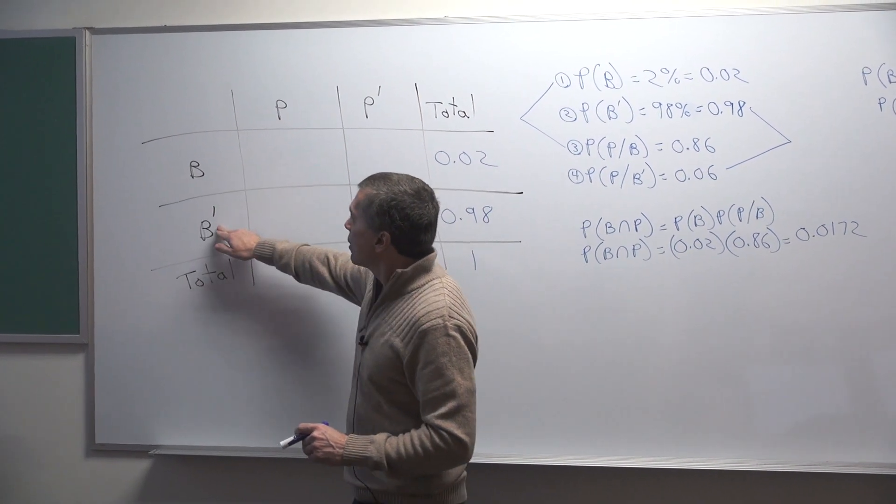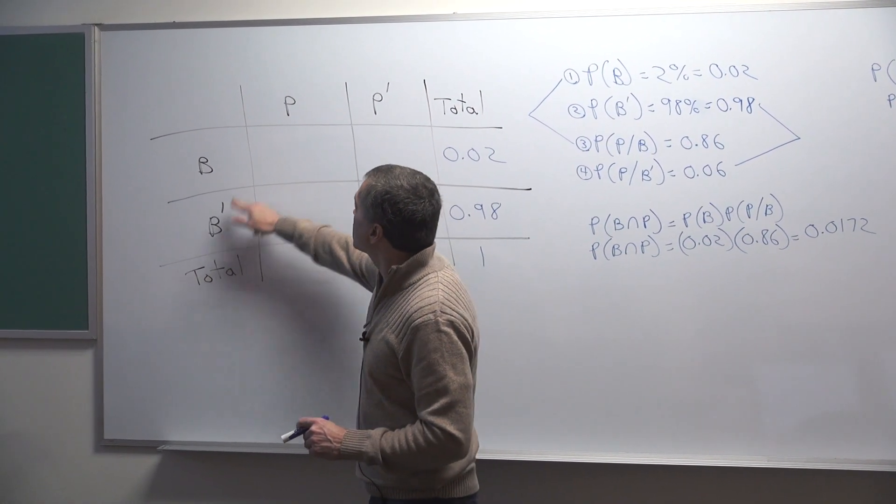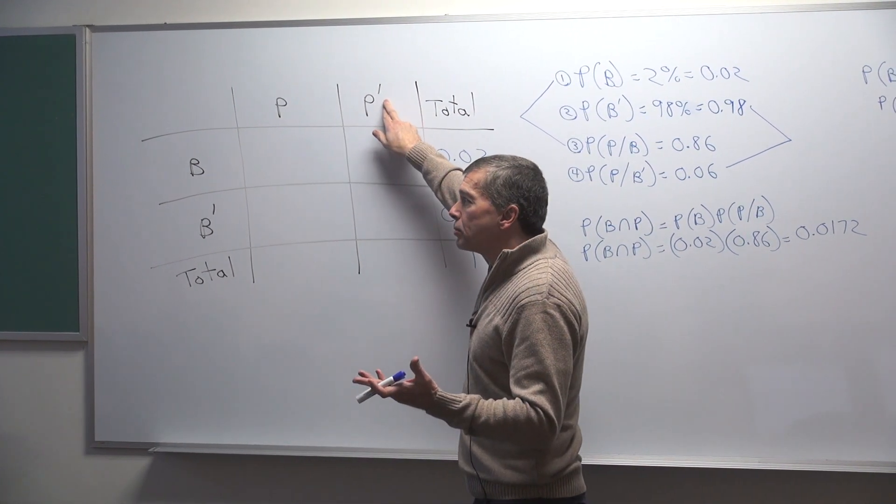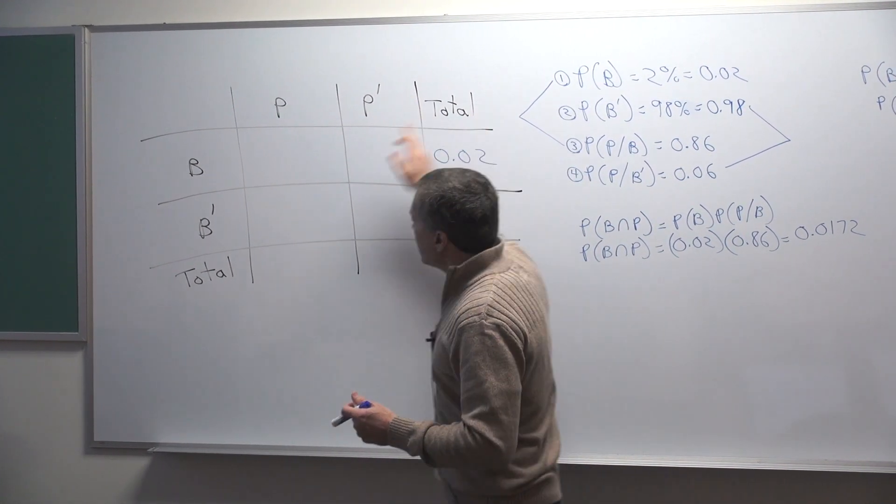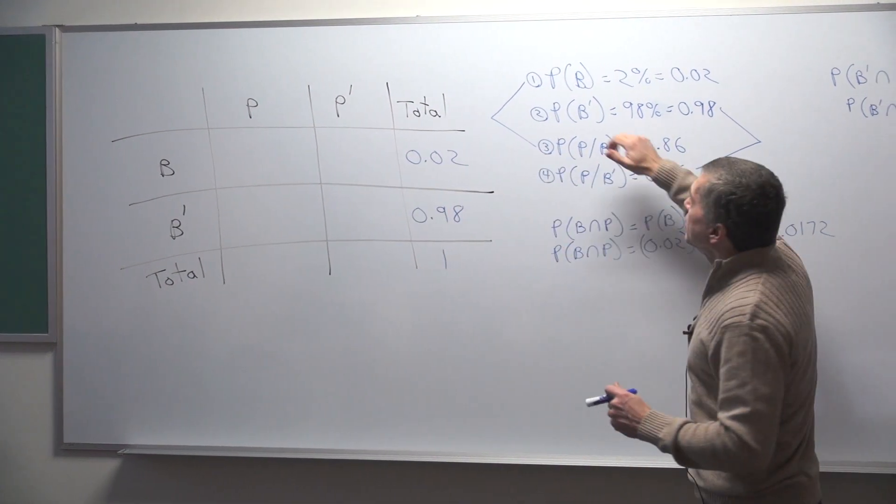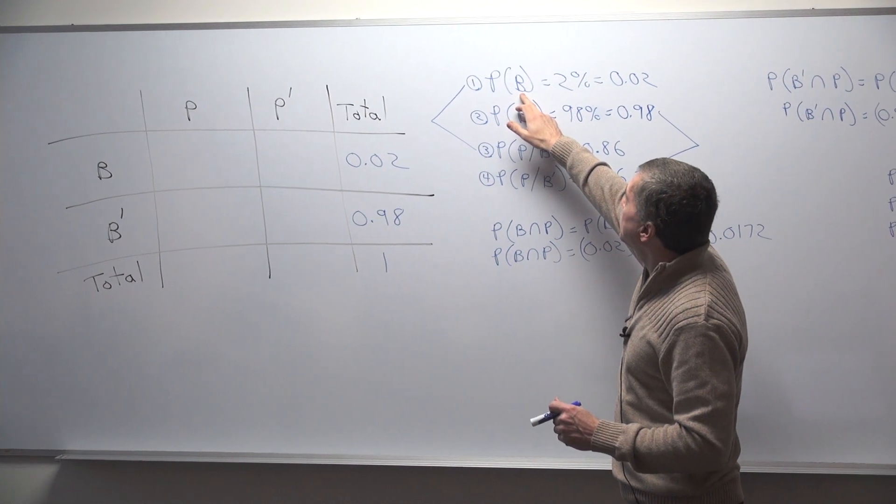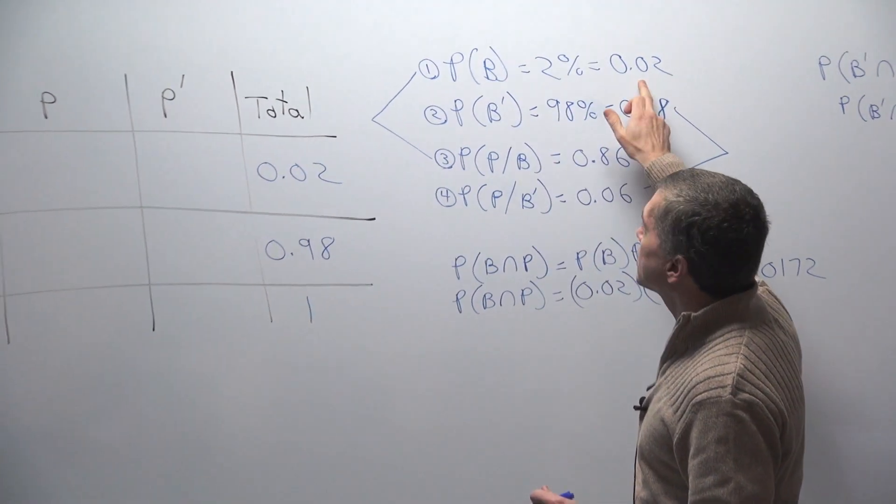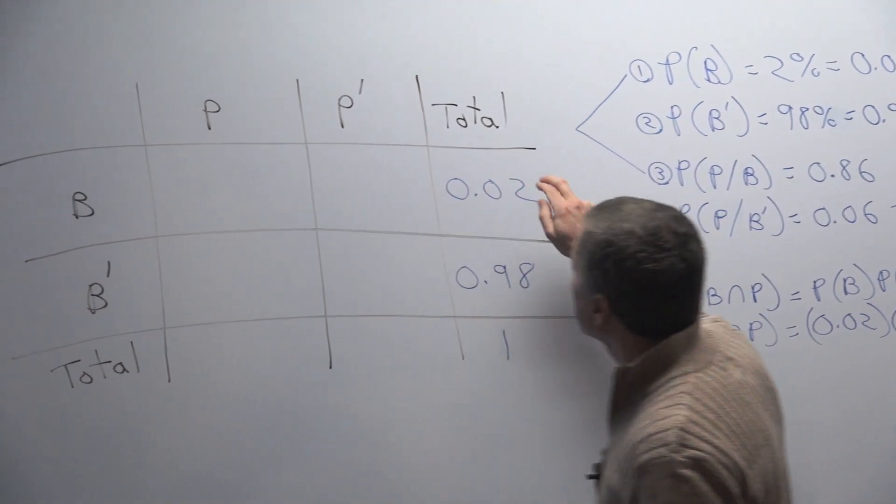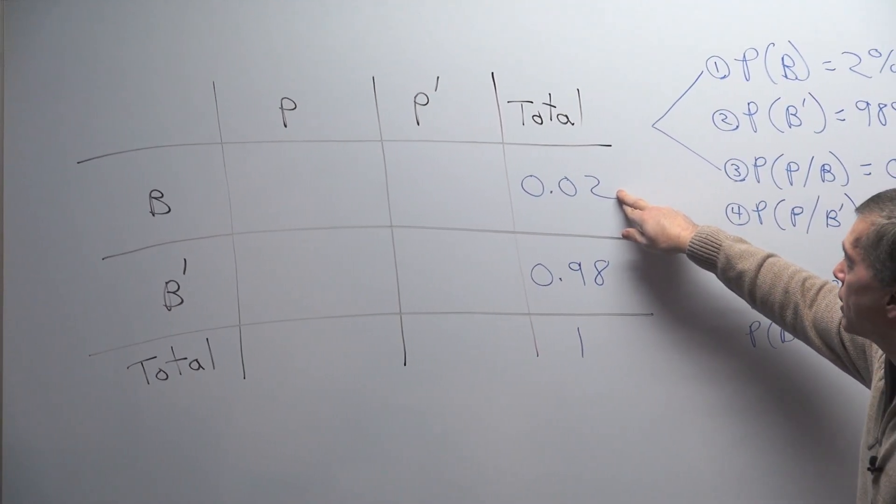I have B for breast cancer. B with a hash mark means not breast cancer. Positive result here and not a positive result or in other words a negative result right here. And you have to keep track of your totals. We are given in the problem that the probability that a woman has breast cancer is a 2% chance. That's the same as 0.02. You put your probability of breast cancer right here. Here is the total probability of breast cancer, 2%.